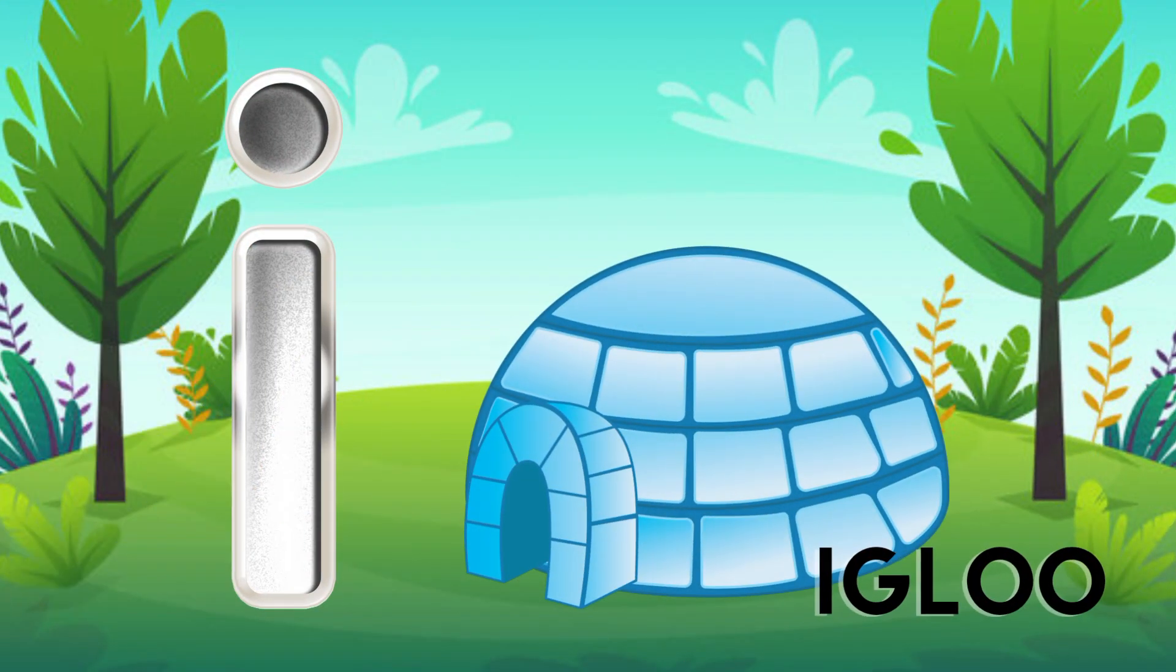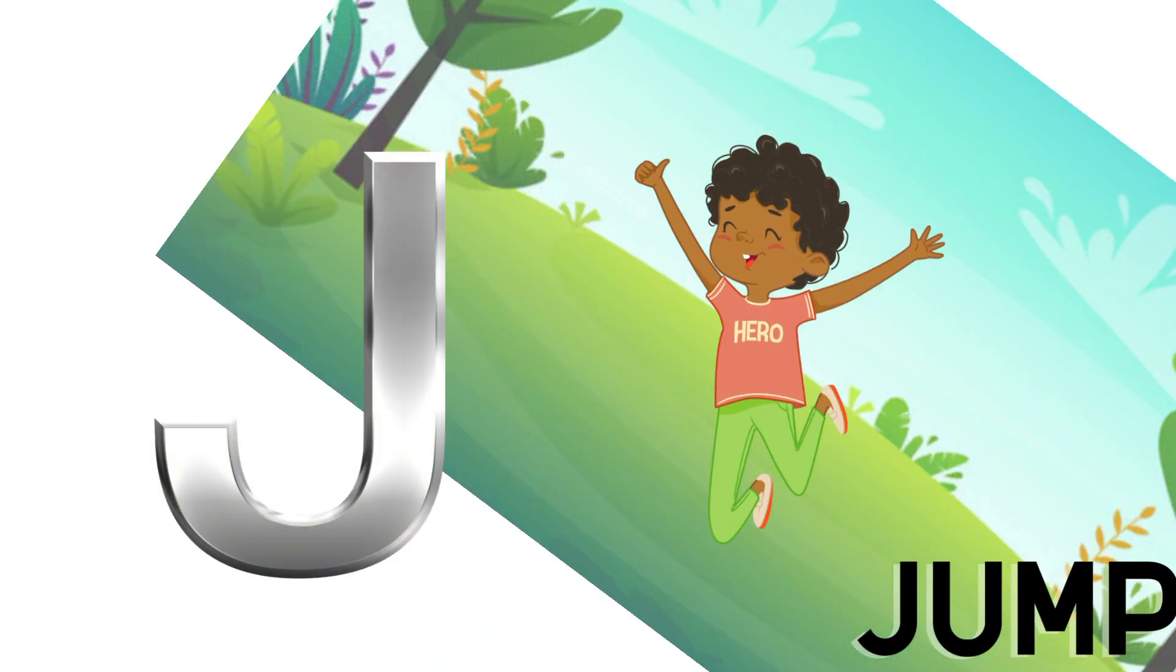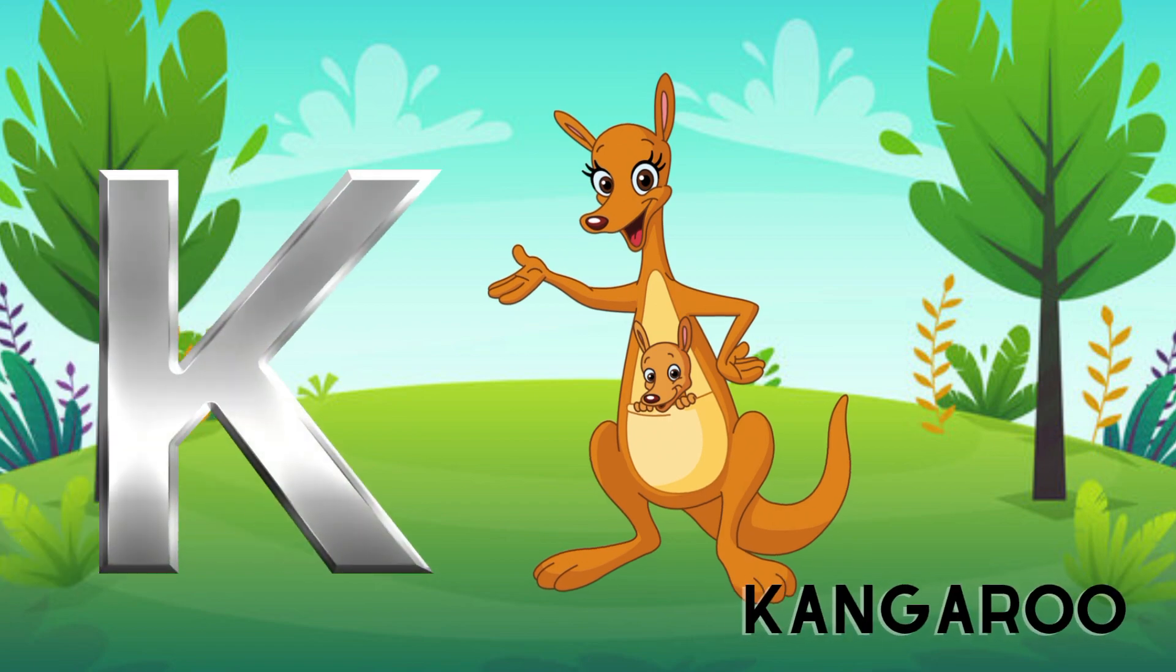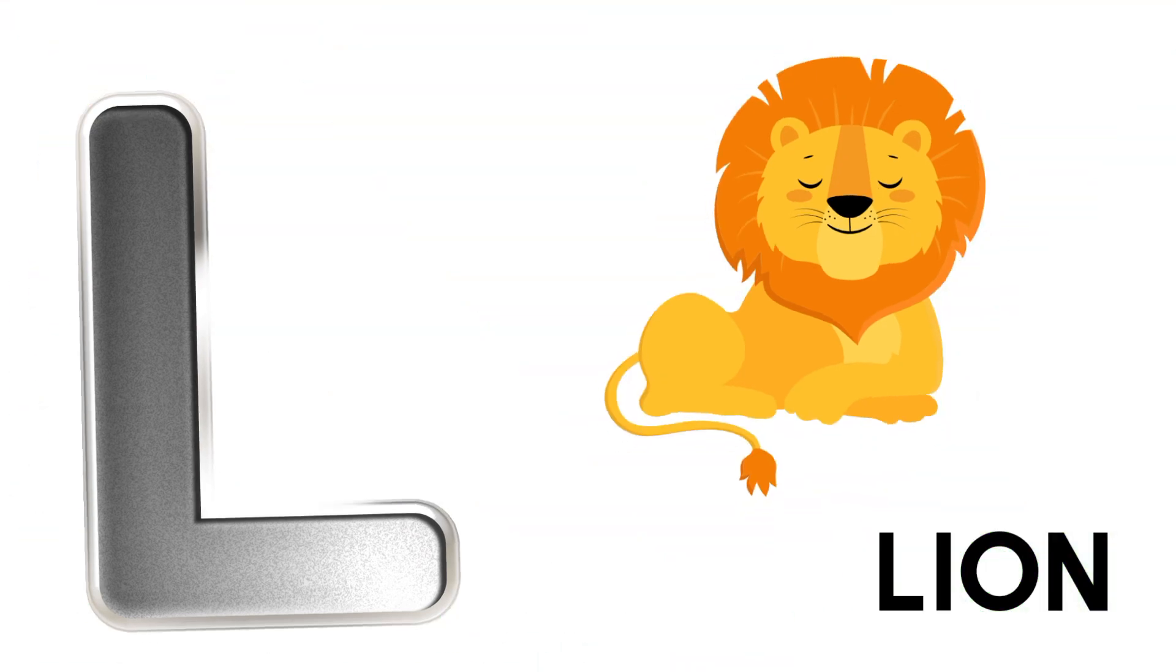I is for igloo, i-i-igloo. J is for jump, j-j-jump. K is for kangaroo, k-k-kangaroo. L is for lion, l-l-lion.